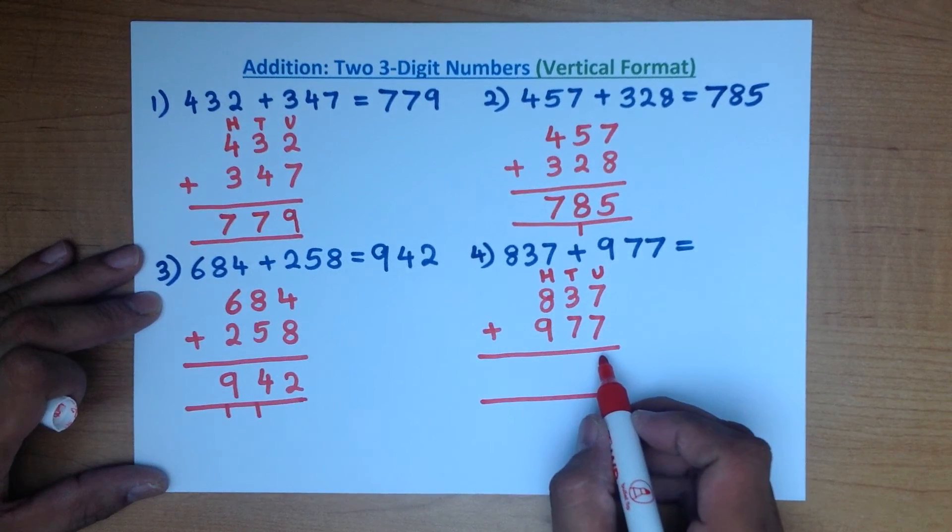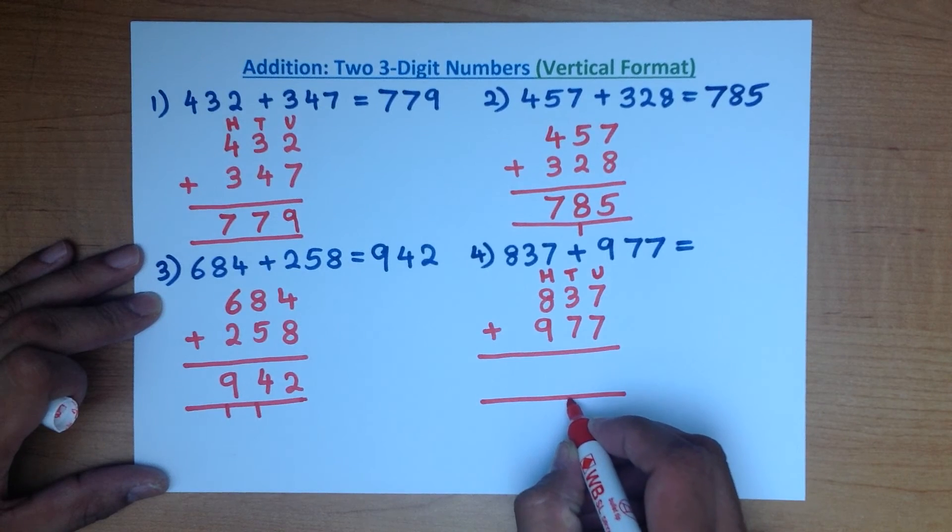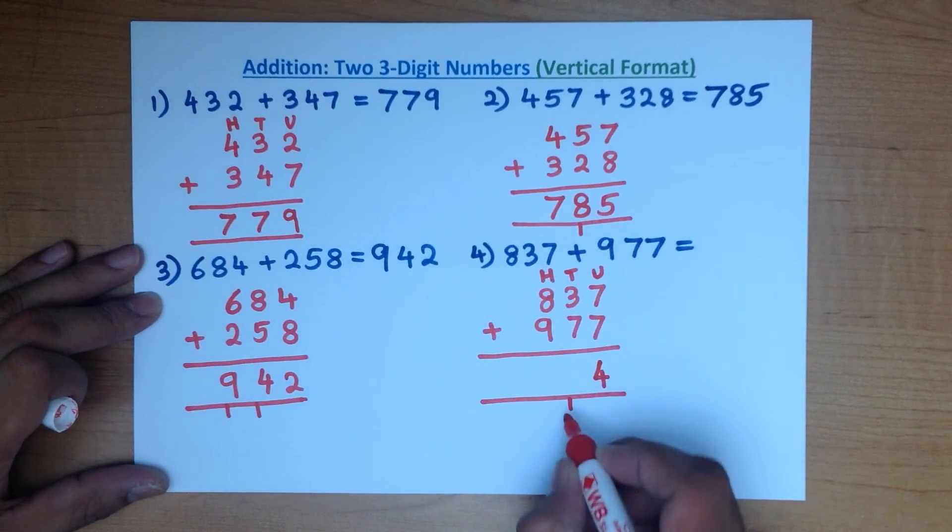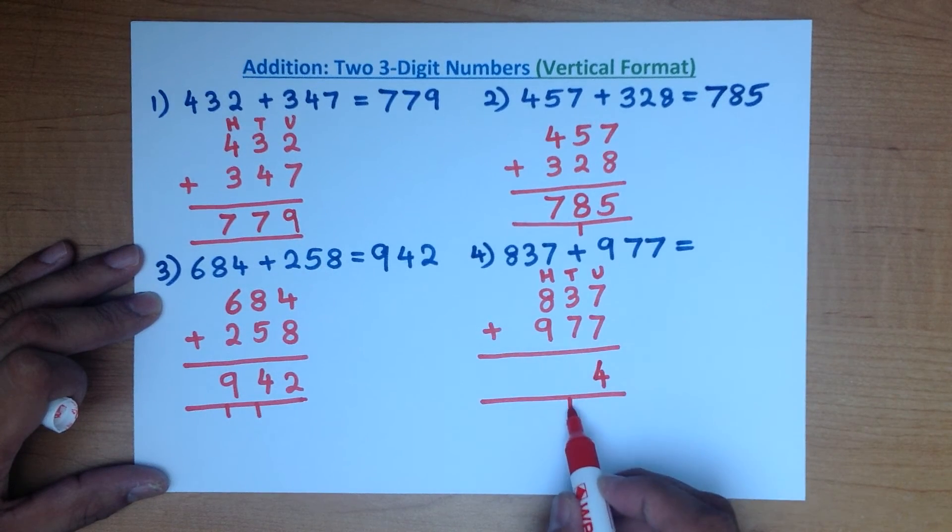So we start with the right hand side. What is 7 plus 7? That's right, it's 14. And we put 1 here and 4 here. This 1 is part of the tens column. What is 3 plus 7 plus 1? That's right, it's 11. Put 1 here and 1 here.